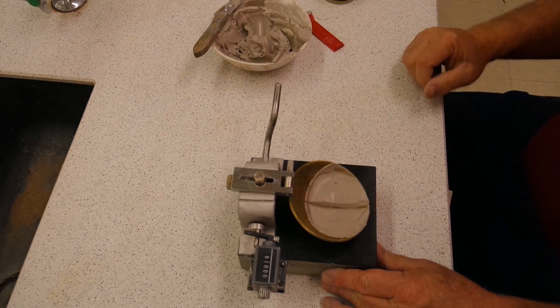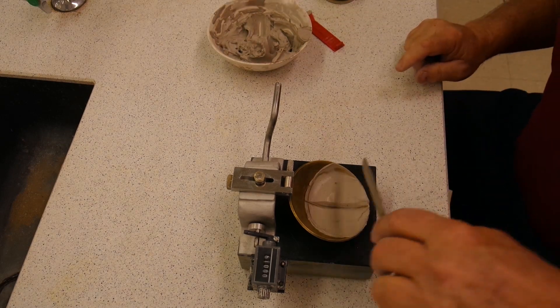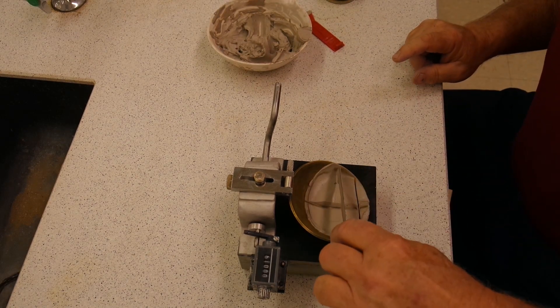We will then cut a sample out where the material came together, put it in a drying tin, get a weight, and put it in the oven to dry.